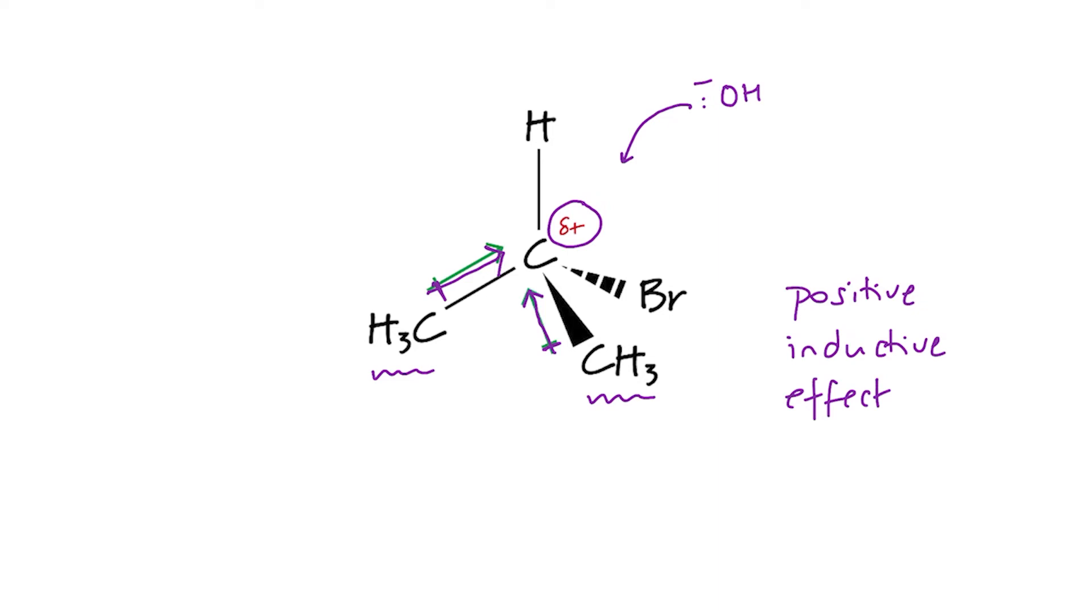Firstly, steric hindrance. Secondly, the unfavorable high energy overcrowded transition state. And thirdly, because alkyl groups are electron-donating. They have a positive inductive effect. They try to stabilize the delta positive carbon atom. And as a result, they make it less attractive for incoming nucleophiles.